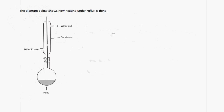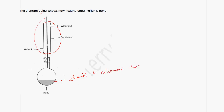This diagram shows how the reaction is done in the laboratory. This is a condenser — this part here is the condenser, and this is the flask where the reaction mixture is. You have the ethanol plus the ethanoic acid in the flask, and any vapors that try to escape — as they pass through the condenser — will be converted back into a liquid and drip back into the flask.